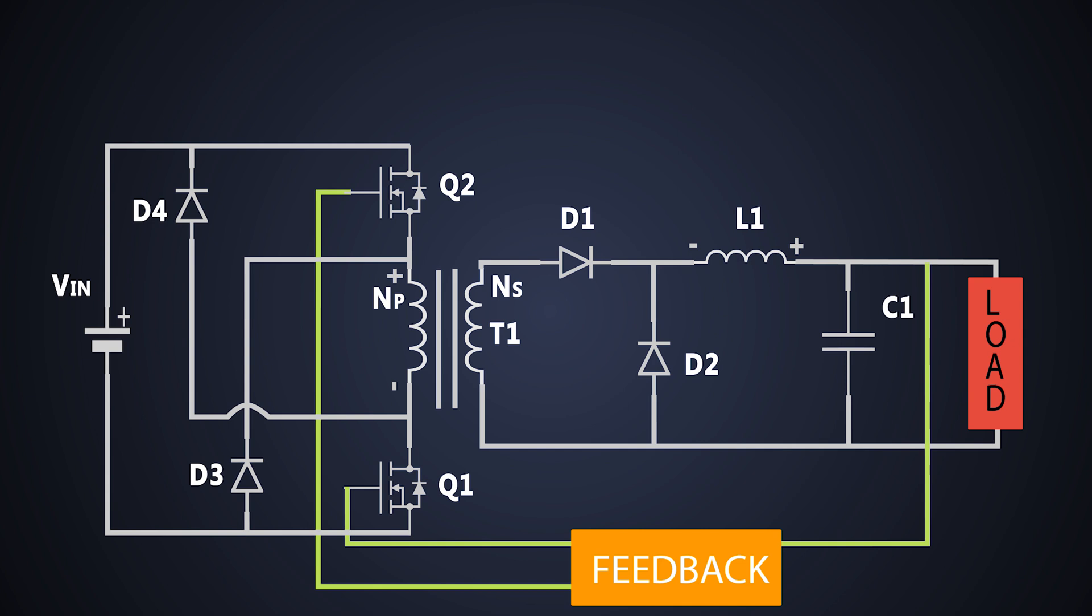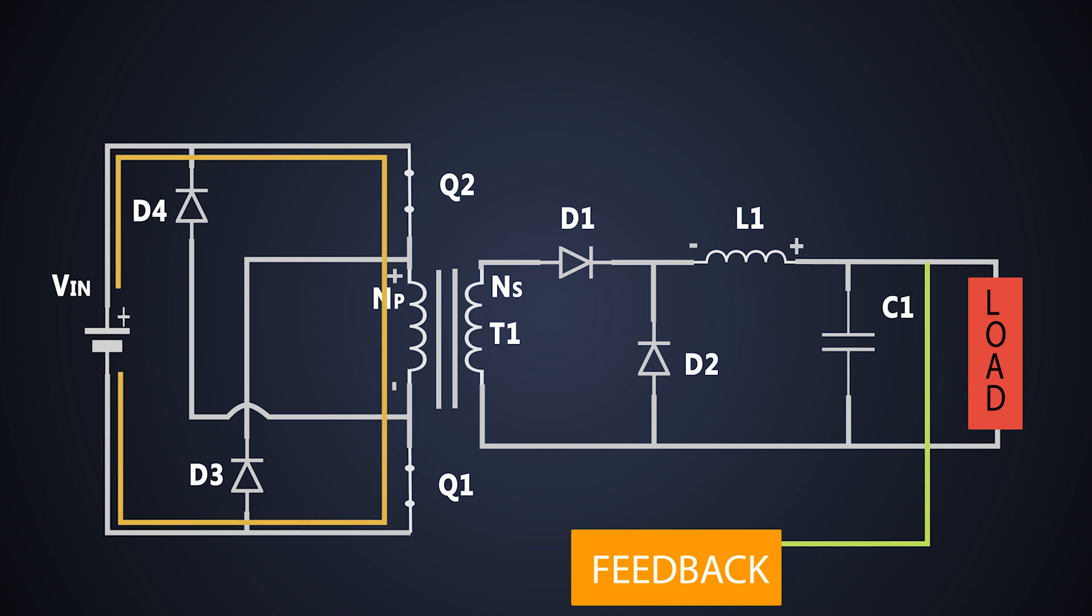Let's see the working of this converter. As usual, we'll divide the operation into two parts. In the first part, the MOSFETs Q1 and Q2 are turned on together. At the same time, the transformer gets energized, transferring the energy through the primary end to the secondary. On the secondary side, the diode D1 conducts and gives output to the load.